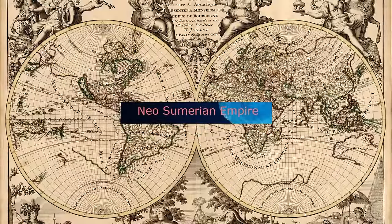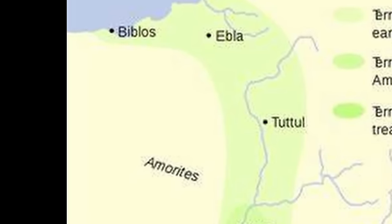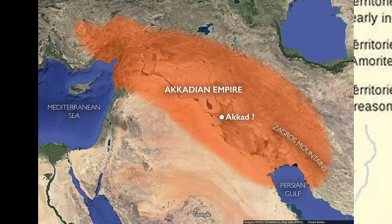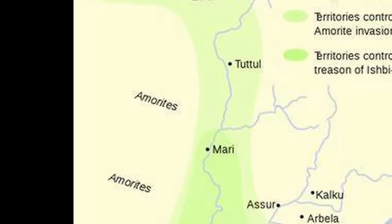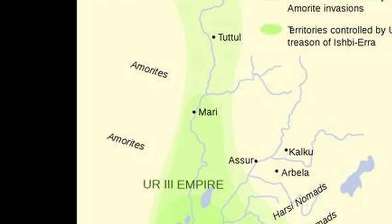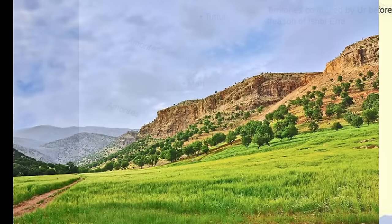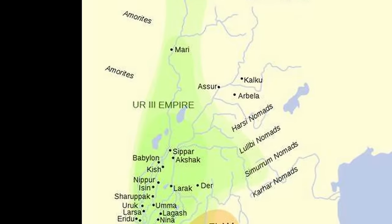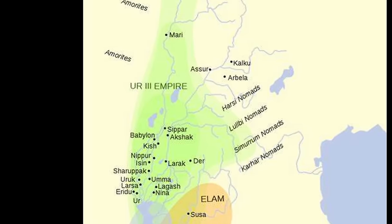Beginning Tier 6, we have the Neo-Sumerian Empire. The Neo-Sumerian Empire refers to the time in ancient Mesopotamian history when the Sumerians ruled again after the Akkadian Empire fell, lasting from around 2100 BC to around 2000 BC. The Third Dynasty of Ur, led by Ur-Nammu and later his son Shulgi, established the Neo-Sumerian Empire, with its capital at Ur, a prominent city-state in ancient Sumer. The empire eventually faced internal and external challenges. The Gutian people from the Zagros Mountains invaded Mesopotamia, leading to the fall of the Third Dynasty of Ur and the end of the Neo-Sumerians. It left a lasting impact on Mesopotamia even though it was short-lived.